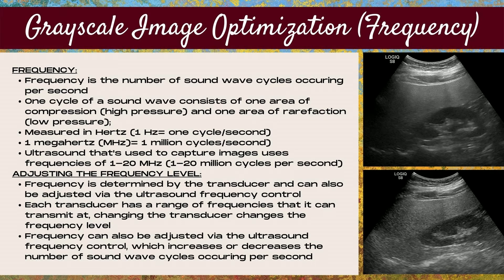So what in the world is frequency? Frequency is the number of sound wave cycles occurring per second. One cycle of a sound wave consists of one area of compression — this is an area of high pressure — and one area of rarefaction — this is an area of low pressure — and it's measured in hertz.